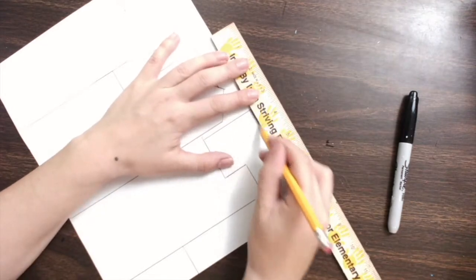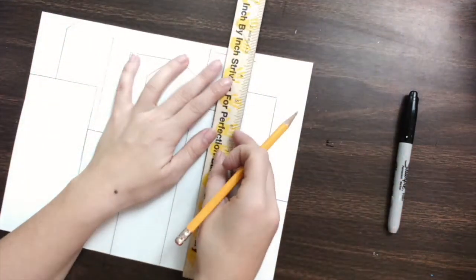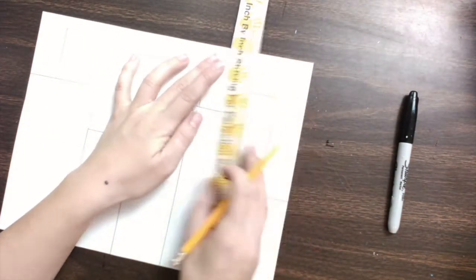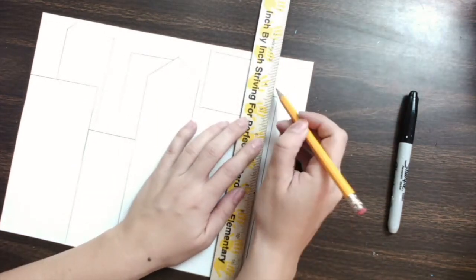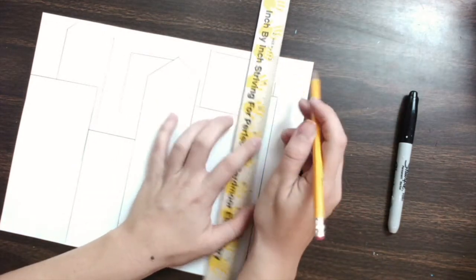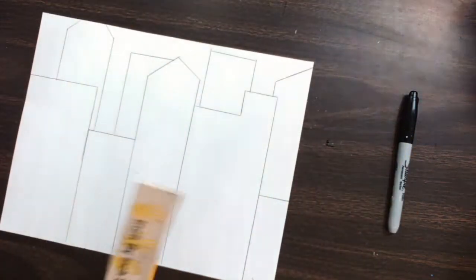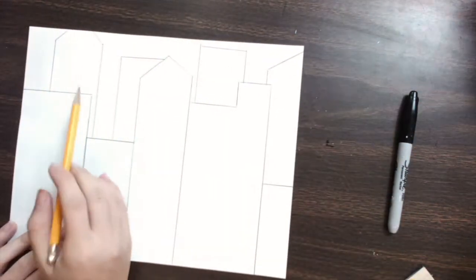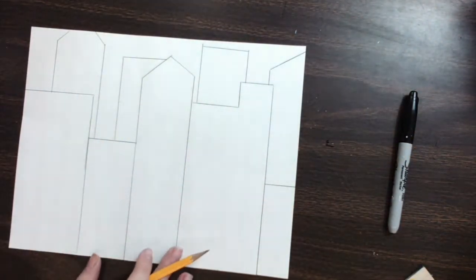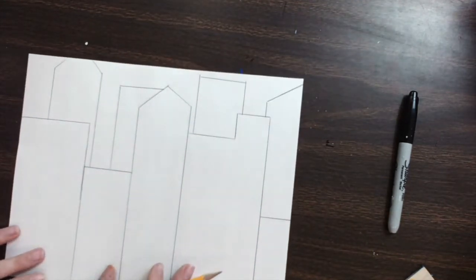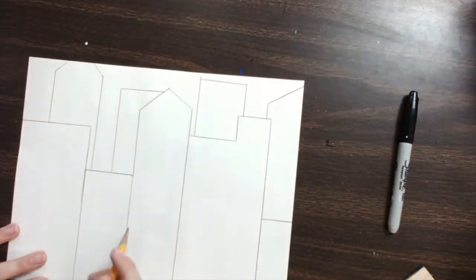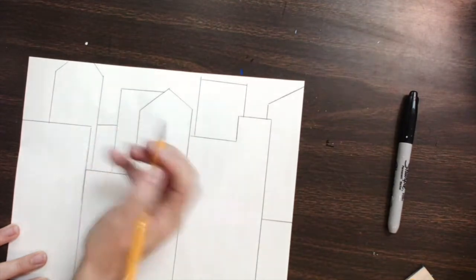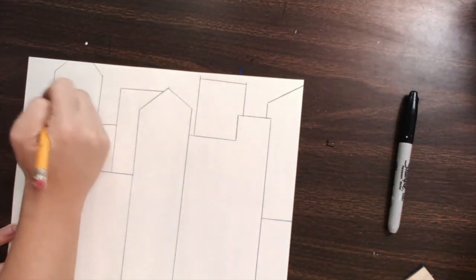So what buildings do you have behind your other buildings? I have four buildings in the background. I could even make some more. Maybe I'll make a little tiny one right here. Maybe another tiny one right over here.